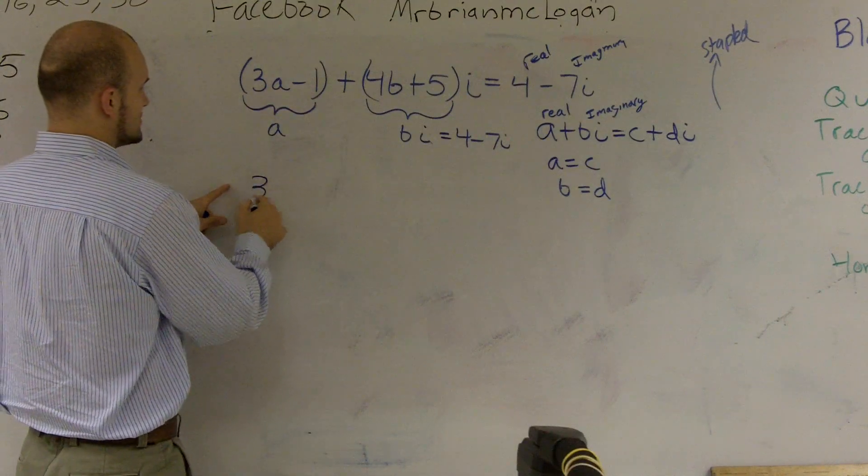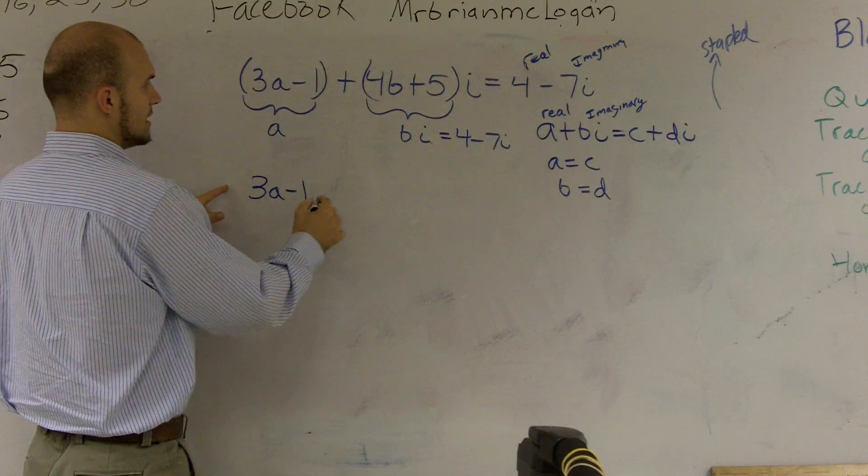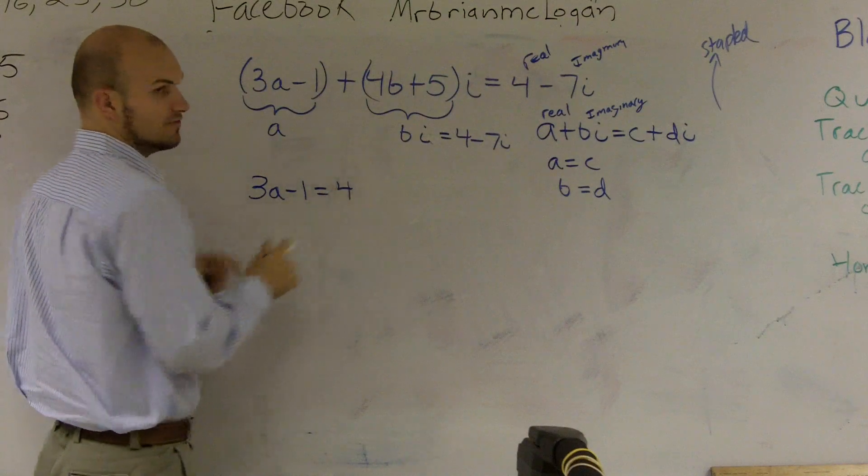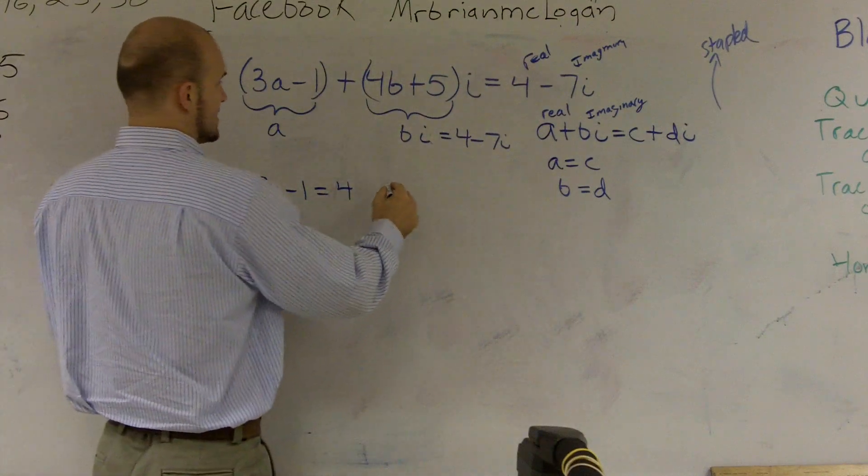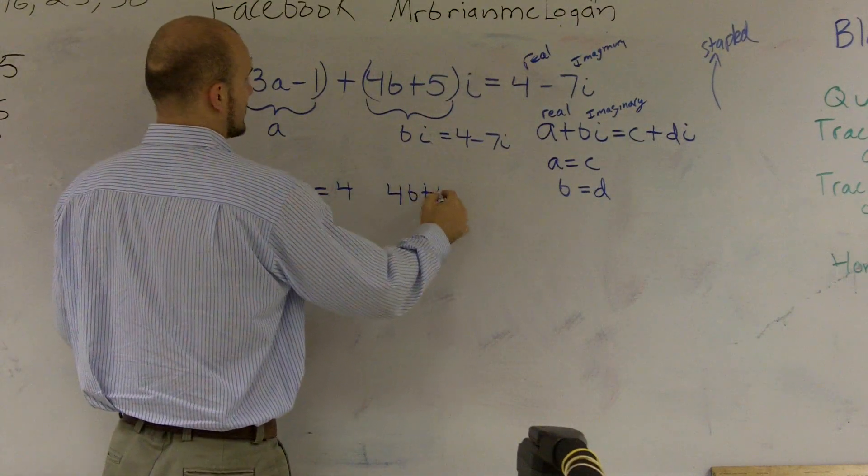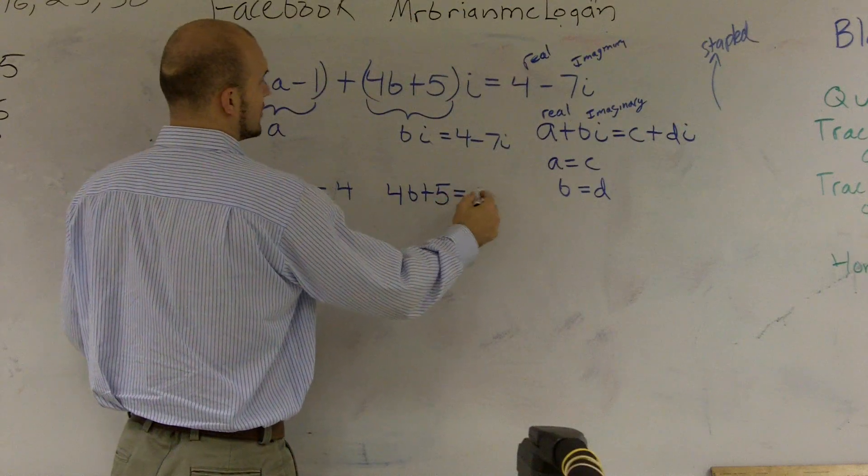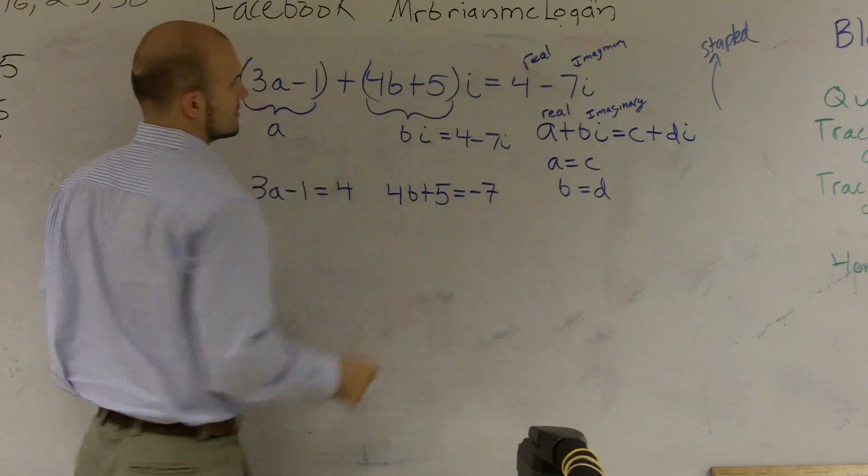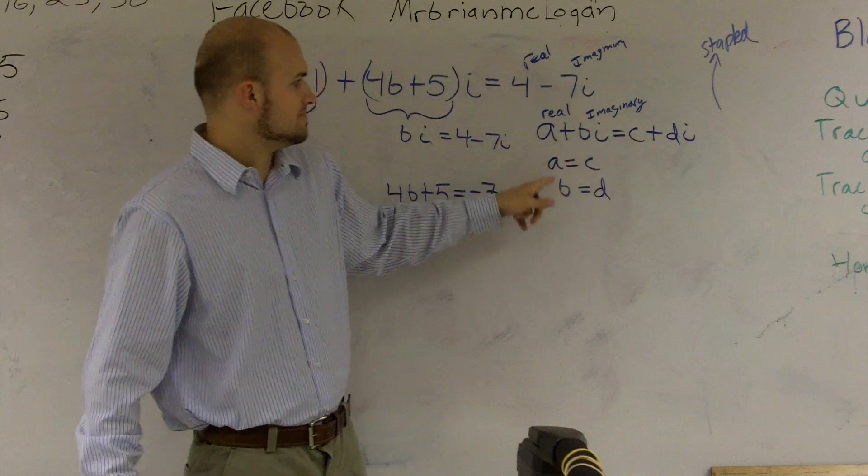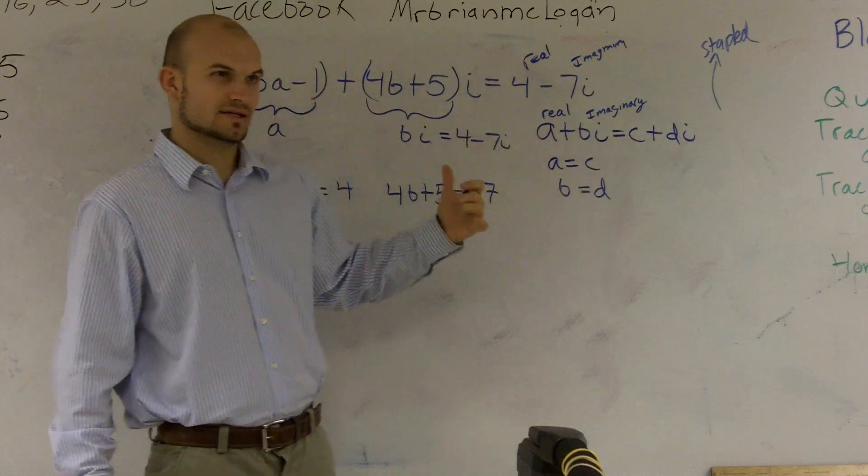So therefore, you have two equations. You could say 3a minus 1 has to equal 4, and you could say 4b plus 5 has to equal a negative 7. Because a has to equal c, and b has to equal d. Does that make sense?